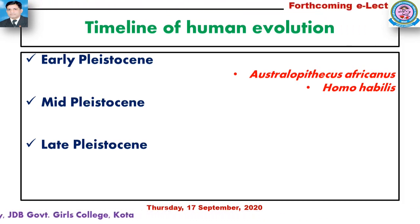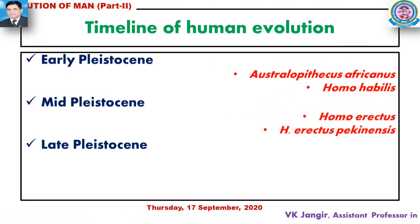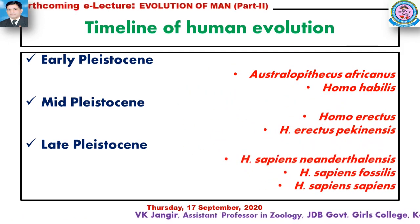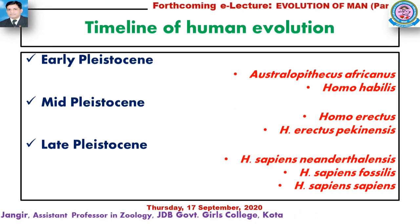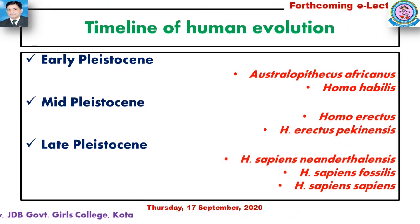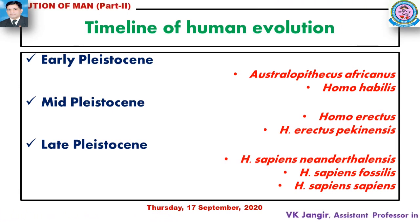In the mid-Pleistocene, we have Homo erectus pekinensis. In the late Pleistocene epoch, we have Homo sapiens neanderthalensis — this represents the first human-like evolution.